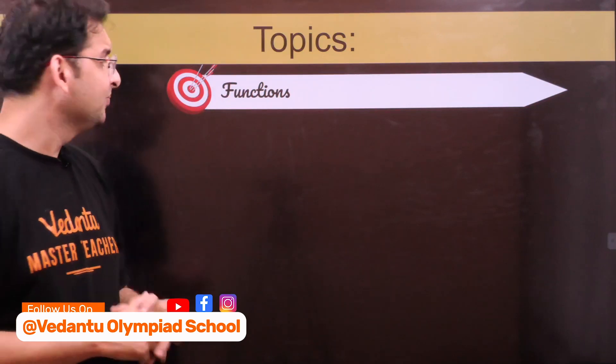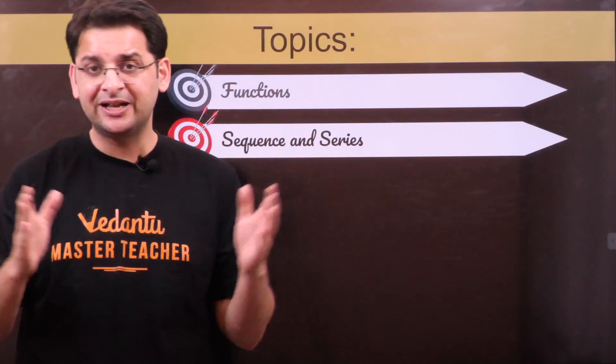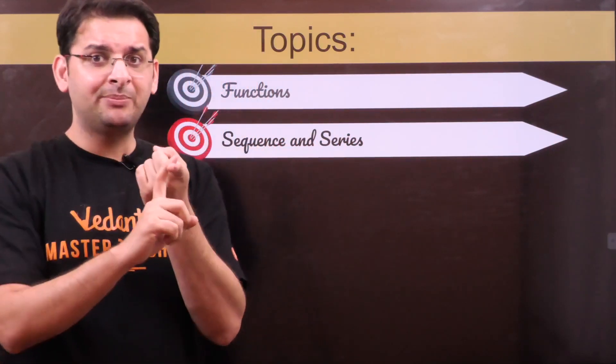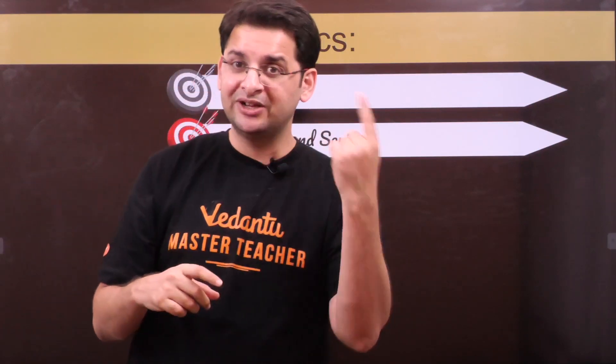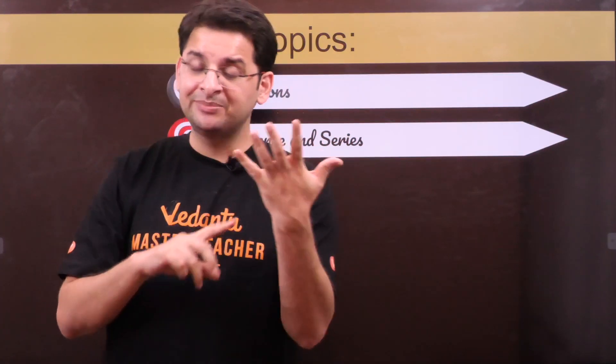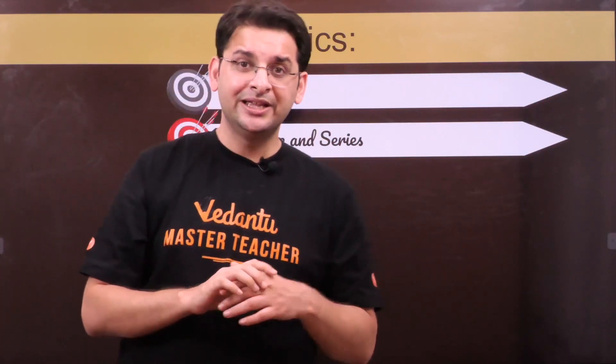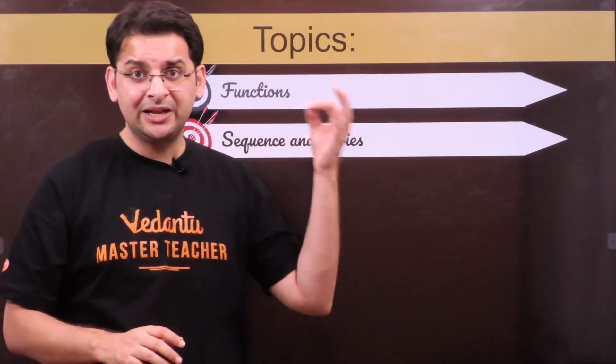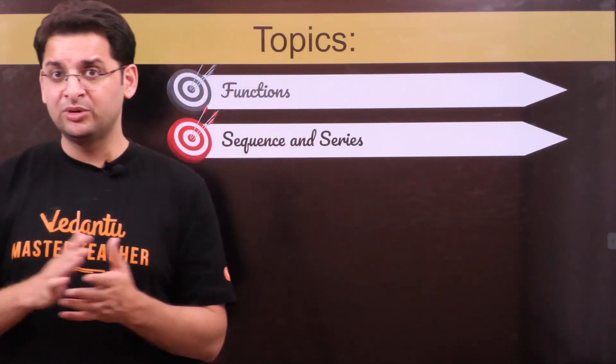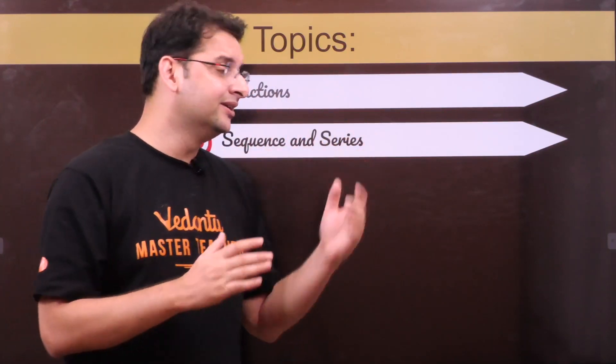Followed by sequence and series, which is one chapter in class 11. AP (arithmetic progression) is given in 10th but here in more detail. There are good questions on geometric progression, harmonic progression, AGP, sigma notation. If you cover class 11 textbooks, it is very good, but if you cover books like RD Sharma or any good IIT-JEE books, it will be better as it will give you confidence to answer these questions.